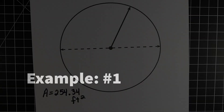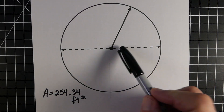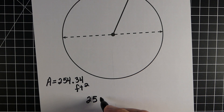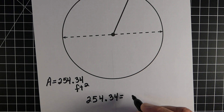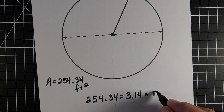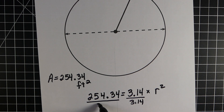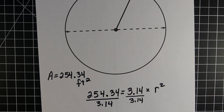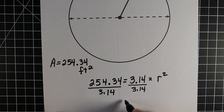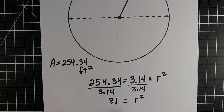We have three examples to go over. In example number one, we already know the area of the circle: 254.34 feet squared. The formula is pi times the radius squared. Since we don't know the radius, our first step is to divide both sides by 3.14, which eliminates pi on the right side, leaving only r squared. On the left side, 254.34 divided by 3.14 gives us 81.